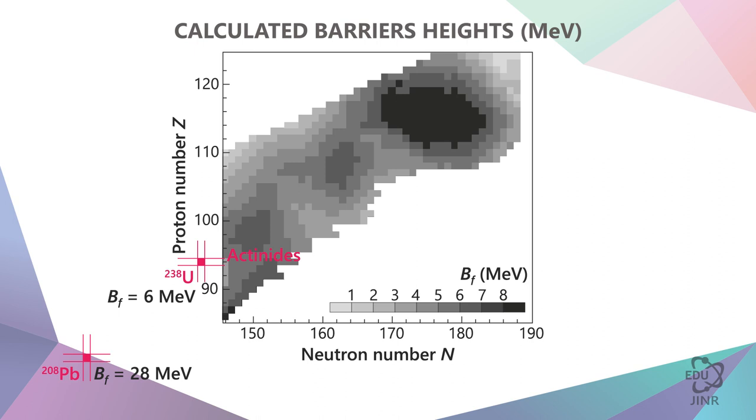Here is a graph depicting the heights of the fission barriers. This is the known barrier for lead, 28 MeV. This is the known barrier for uranium, 6 MeV. And here, fermium 252 appears. This one, which is the 108th element, hassium, and this one, the 114th element, which is now called flerovium.